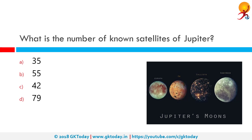What is the number of known satellites of Jupiter? There are 79 known satellites of Jupiter. This gives Jupiter the largest number of moons with reasonably stable orbits of any planet in the solar system.